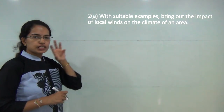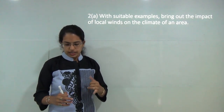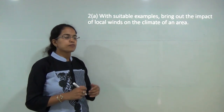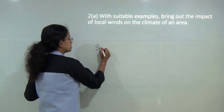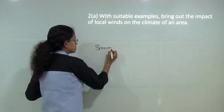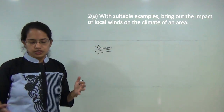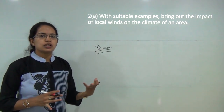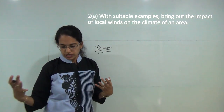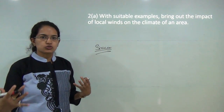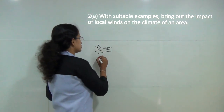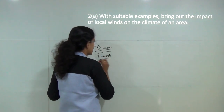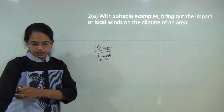For example, Sirocco is a warm dry local wind that is injurious to agriculture. Then you have Chinook, also known as the snow eater, which leads to melting of snow in the region and has an impact on the local atmosphere.